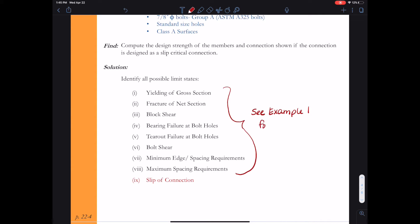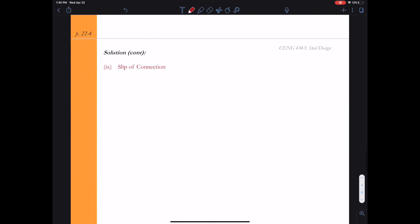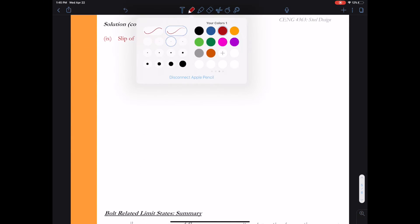And so let's take a look at how we calculate the capacity of this connection in slip. All right, so we turn to AISC chapter J 3.8 and we look at our formula for slip of the connection.